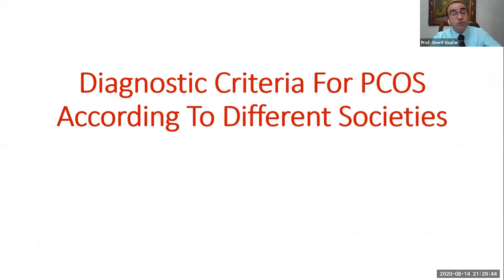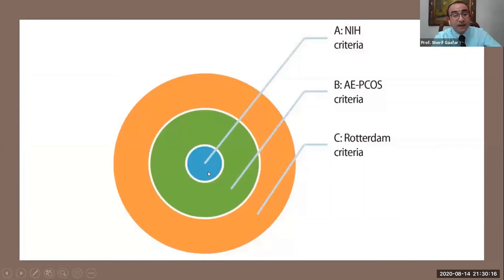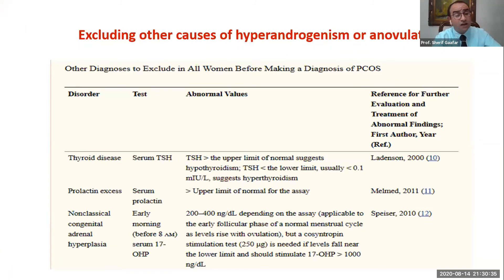Regarding diagnostic criteria according to different societies: the NIH did not mention anything about ovarian morphology. The Rotterdam criteria said two out of three, which is the most commonly used criteria now. The Androgen Excess Society in 2006 said it should have hyperandrogenism — clinical or biochemical — plus either oligo-anovulation or ovarian morphology. The NIH was the most strict criteria, the Androgen Excess Society was in between, and Rotterdam was the loosest criteria, including and identifying more patients. All societies require exclusion of other causes, especially thyroid disease using serum TSH, serum prolactin, and non-classical congenital adrenal hyperplasia using early morning 17-hydroxyprogesterone.